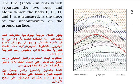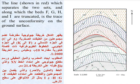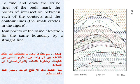The line shown in red, which separates the two sets and along which the beds F, G, H, and I are truncated, is the trace of the unconformity on the ground surface. To find and draw the strike lines of the beds, mark the points of intersections between each of the contacts and the contour lines, shown as small circles in the figure.